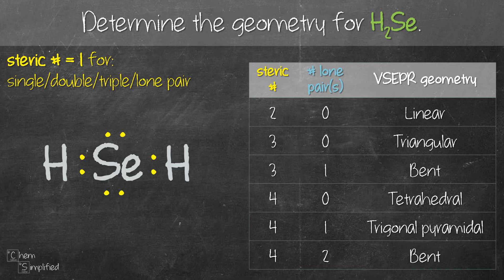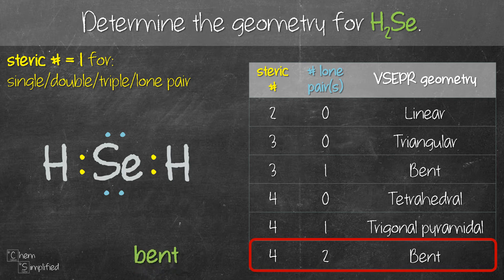As we've already mentioned, Se has two lone pairs. So if we refer to the table on the right-hand side, steric number 4 with two lone pairs is going to give us a bent shape.